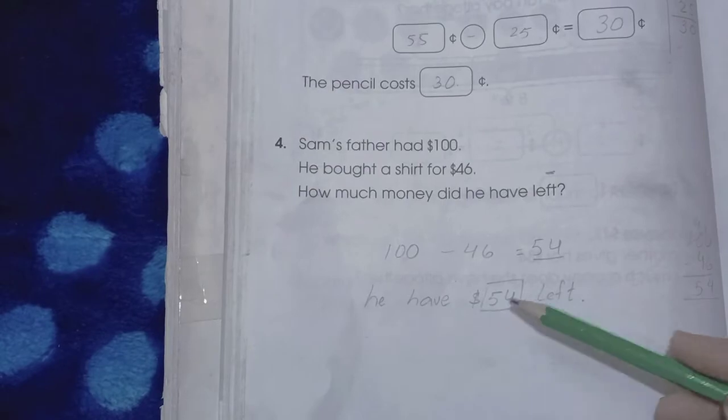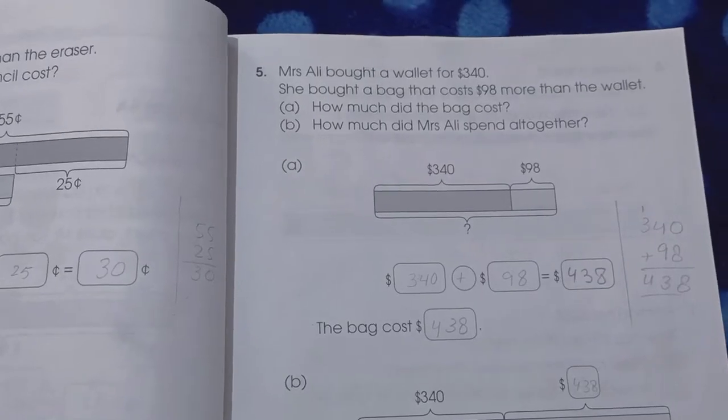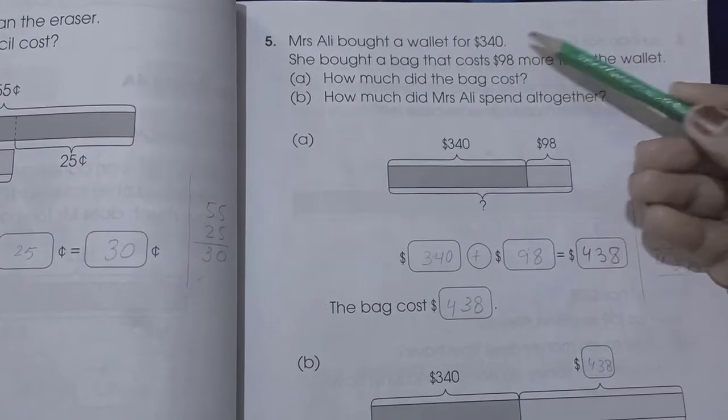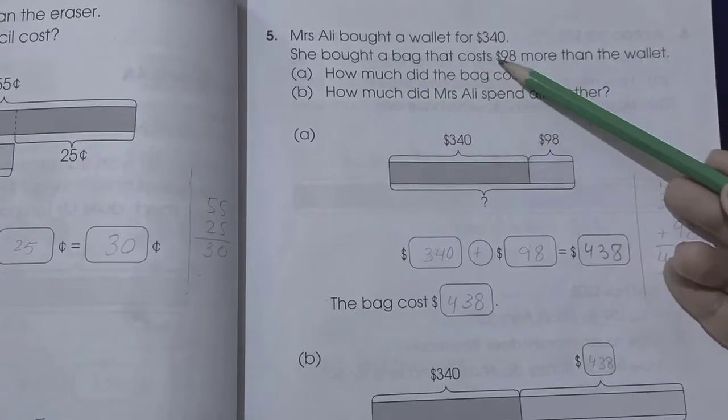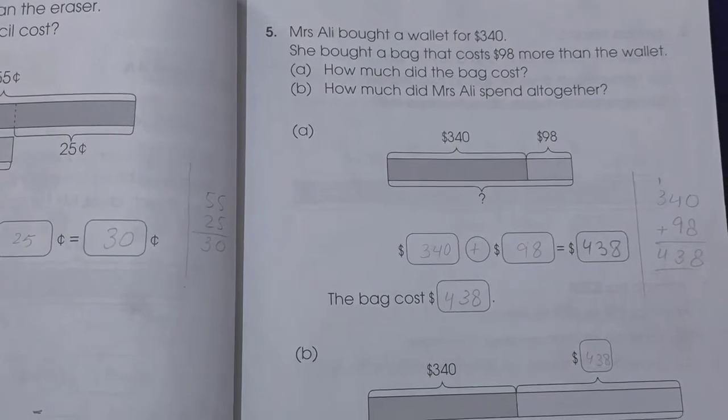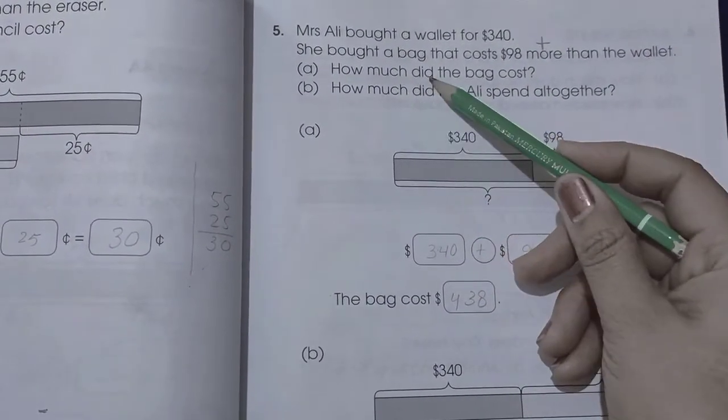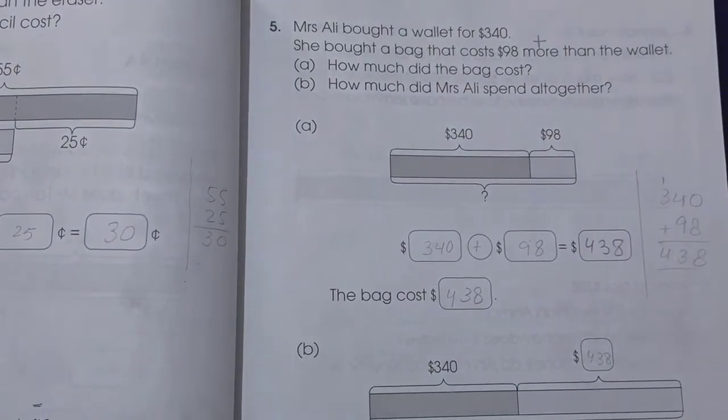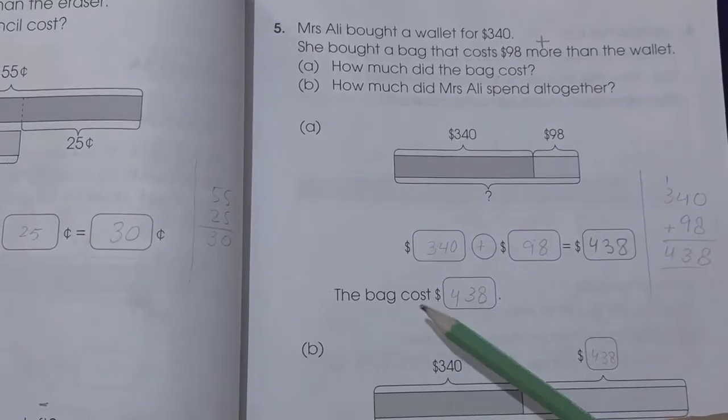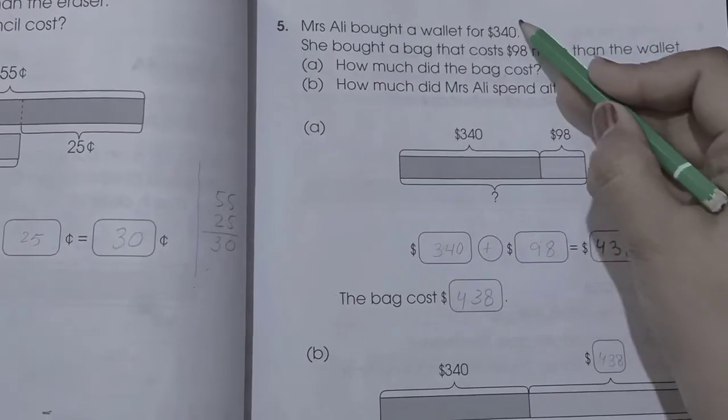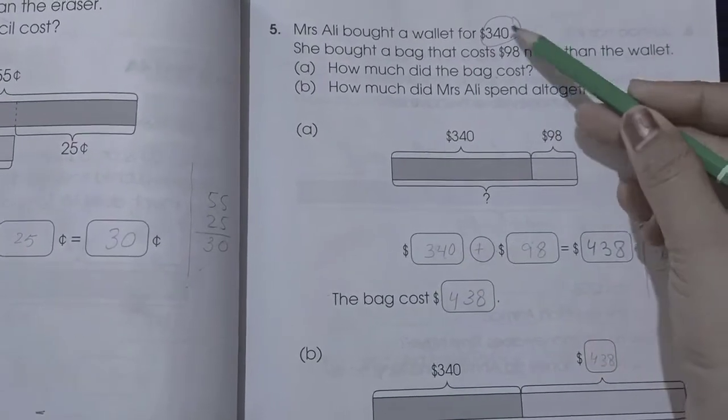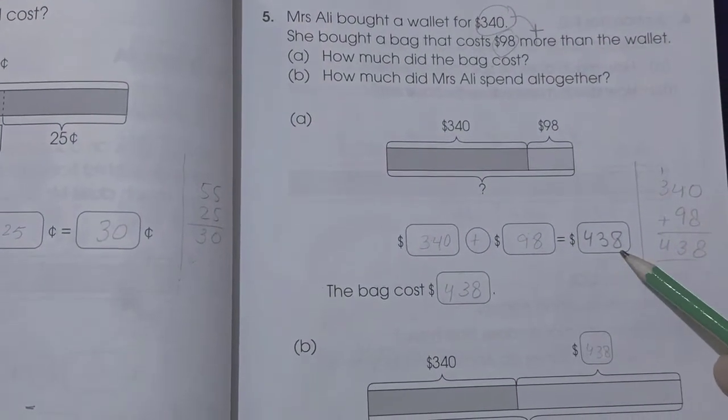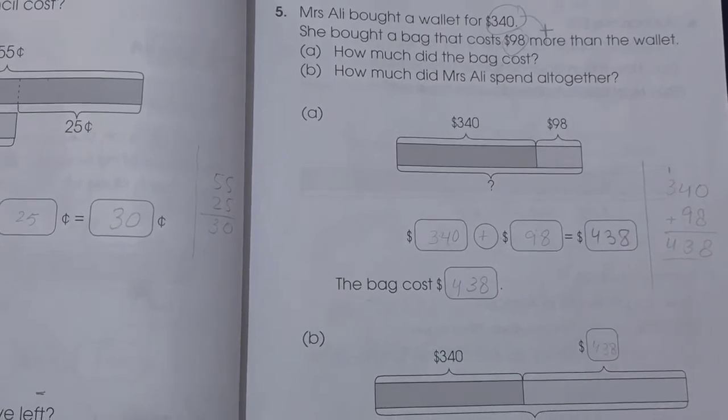Page number 35, question number five. Mrs. Ali bought a wallet for $340. She bought a bag that costs $98 more than the wallet. How much did the bag cost and how much did Mrs. Ali spend altogether? Here we have to find two different things. Number one, the bag cost: total cost of wallet 340 plus 98, because the bag costs 98 more. So 340 plus 98 is 438 dollars. The bag costs 438 dollars.